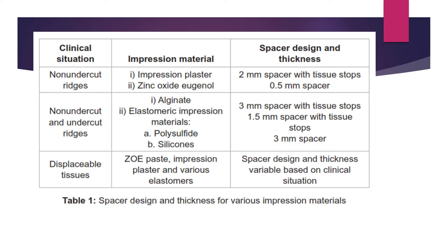This table represents various spacer designs and thickness for various impression materials. For non-undercut ridges, impression plaster and zinc oxide eugenol are used, with a 2 mm spacer with tissue stops and 0.5 mm spacer. For non-undercut and undercut ridges, alginate and elastomeric materials like polysulfide and silicones are used — 3 mm spacer with tissue stops for alginate, 1.5 mm spacer with tissue stops for polysulfide, and 3 mm spacer for silicones. For displaceable tissues, zinc oxide eugenol paste, impression plaster, and various elastomers are used as the impression material, with spacer design and thickness variable based on clinical situation.